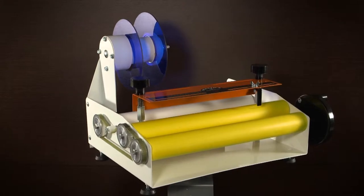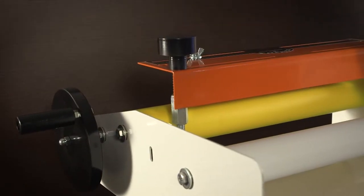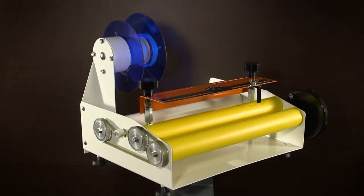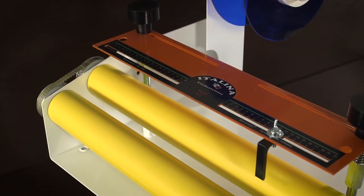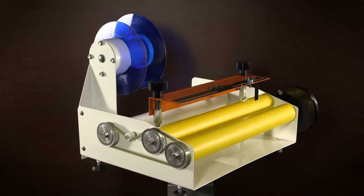After completing the assembly of the machine, proceed with adjustments according to the features of your bottle and reel mounting with self-adhesive labels.